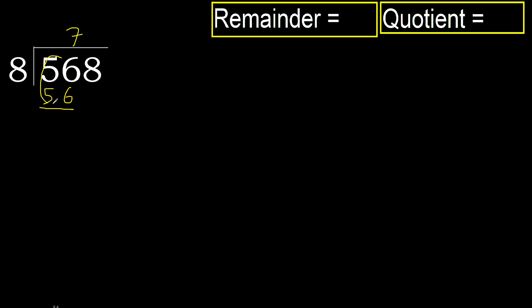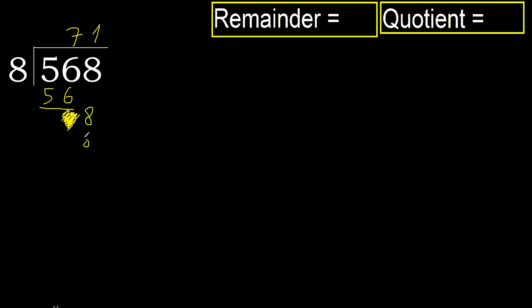Subtract 56 minus 56 equals 0. Next, bring down 8. 8 multiply by 1 is 8, ok.